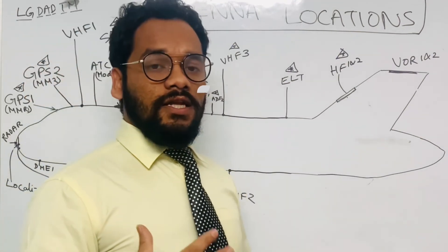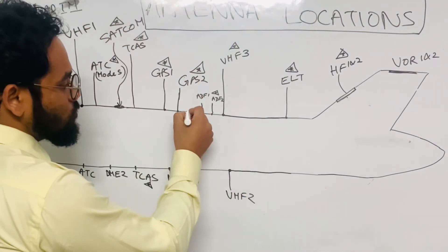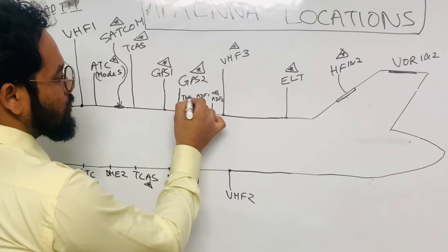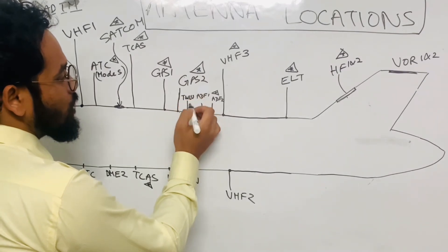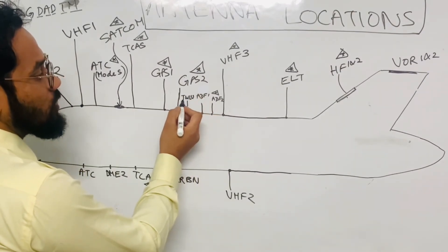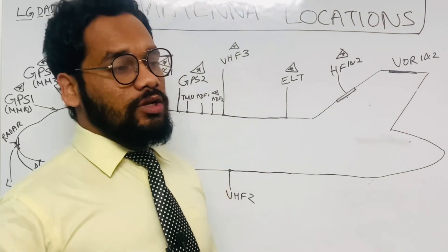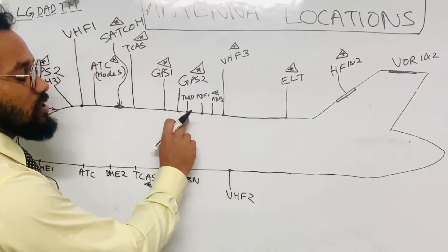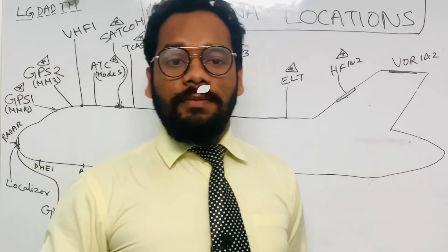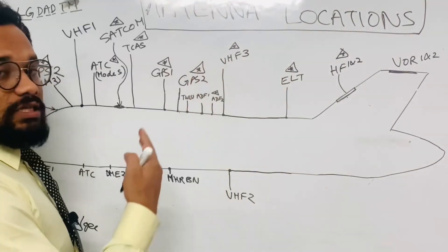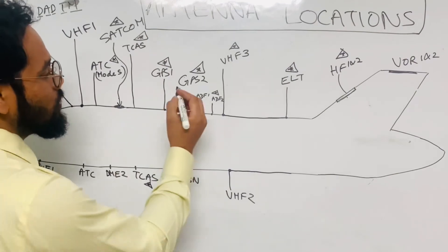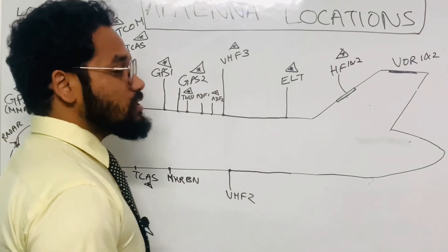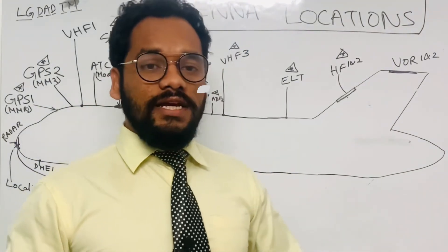There is also an antenna called the TWLU — Terminal Wireless LAN Unit. Its location is here on the aircraft. This antenna allows use of LAN connectivity in the terminal area. In many MSN numbers currently in use, the TWLU antenna may not be present, so it is an optional feature marked with a triangle and star.